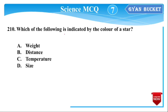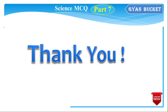Next question: Which of the following is indicated by the color of a star? The color of a star indicates its temperature. If the temperature is low, the star appears a different color. Please like, share, comment, and subscribe to our channel. Next class will continue — thank you very much.